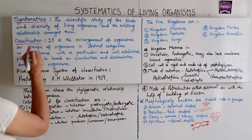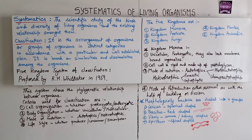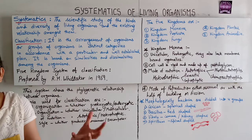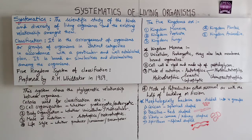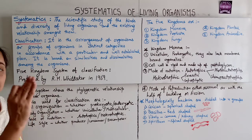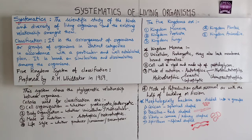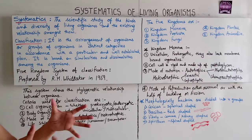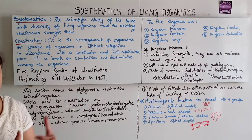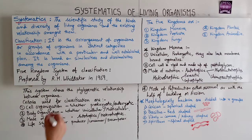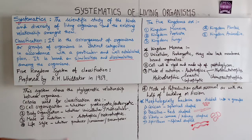The next term is classification. It is the arrangement of organisms or groups of organisms into distinct categories in accordance with a particular and well-established plan. It is based on similarities and dissimilarities among the organisms. This is called classification.